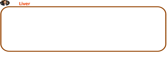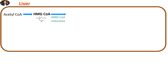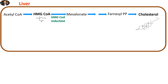Production of cholesterol in the liver starts from conversion of acetyl-CoA to HMG-CoA molecule. HMG-CoA is then converted by HMG-CoA reductase enzyme into mevalonate, which after a series of reactions transforms into Farnesyl-PP molecule, which then produces cholesterol.